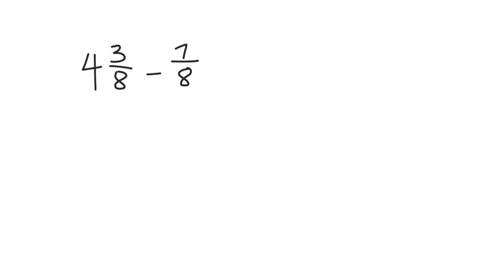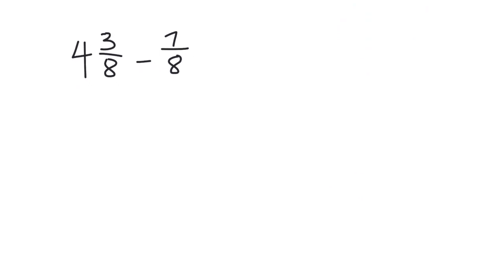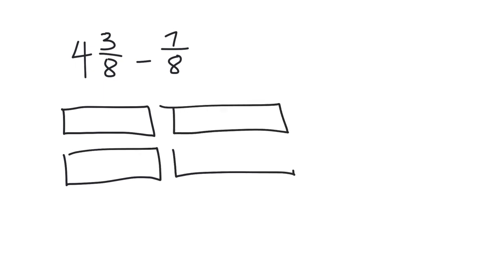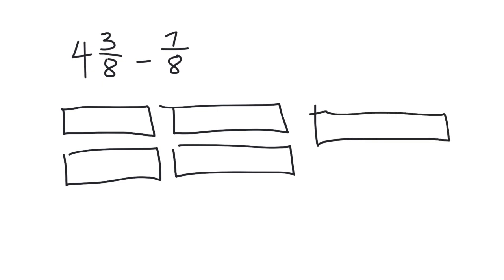Now we can do the same problem using the area model. I'm going to draw four and three-eighths — one whole, two wholes, three wholes, four wholes, and a fifth. I'm going to shade these in: one, two, three, four wholes. This last one I'm going to chop into eight pieces and shade in three of them. Now I've got four and three-eighths take away seven-eighths, but I don't have enough eighths, so I'm going to take one of these whole numbers and chop it into eighths.